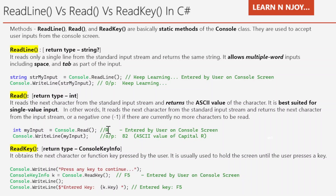Let's suppose the user has entered capital R. Console.Read reads this R and returns its ASCII value — capital R has an ASCII value of 82 — and we store that value into the myInput variable of int data type. We then print myInput into the console window, and the output comes as 82, which is the ASCII value of capital R. So Console.Read reads a character and returns its ASCII value, which we store in myInput and print.